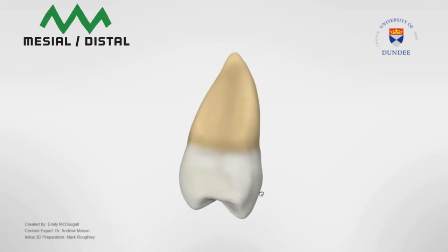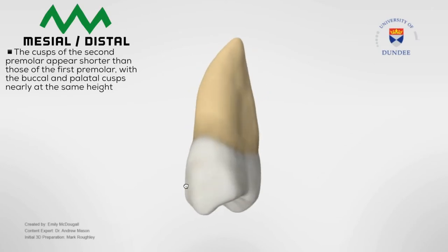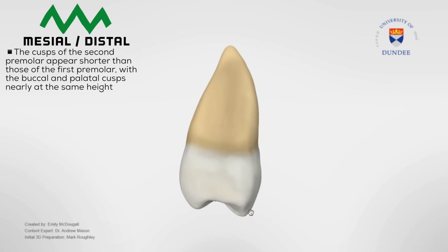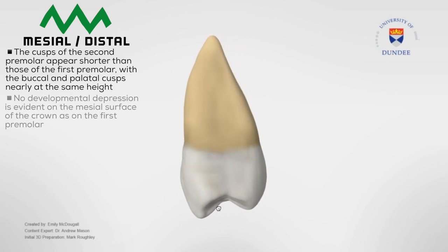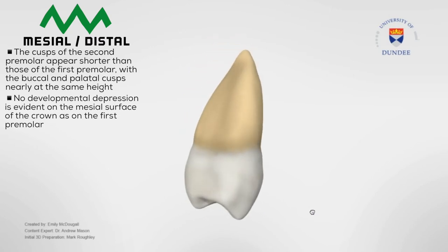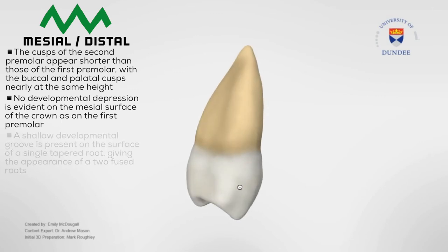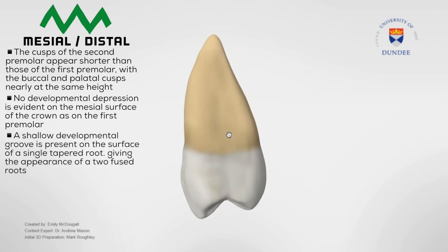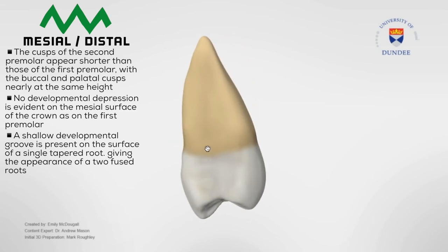Moving on to the mesial and the distal view, the cusps of the second premolar appear shorter than those of the first premolar, with the buccal and the palatal cusps nearly at the same height. No developmental depression is evident on the mesial surface of the crown as we see on the first premolar. However, a shallow developmental groove is present on the surface of a single tapered root, giving the appearance of two fused roots.